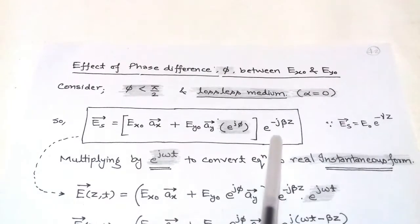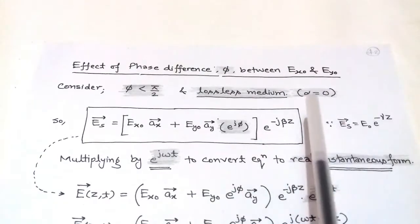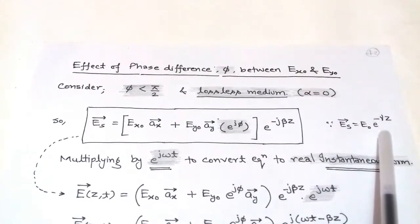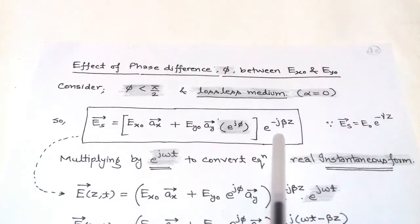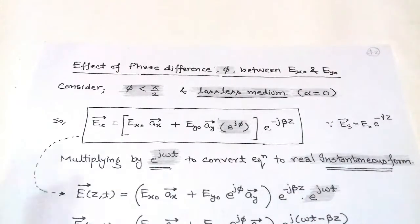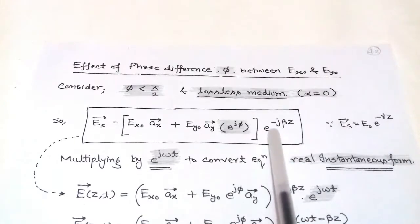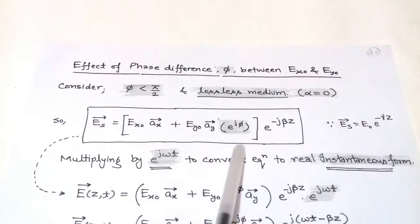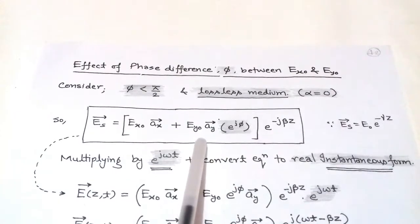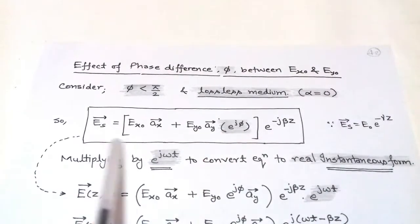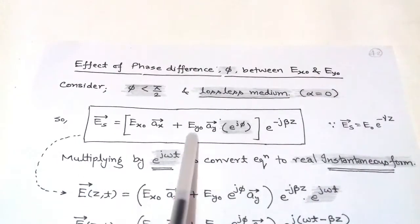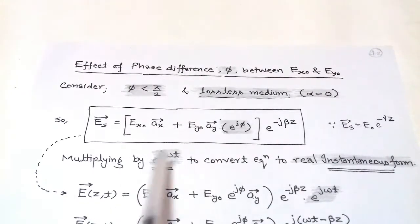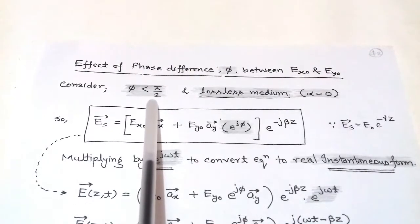Since the medium is lossless, α equals 0. When we write γ equals α + jβ, the exponent splits into e^(−αz) and e^(−jβz). By putting α = 0, the term e^(−αz) becomes 1. To introduce the phase difference φ, we multiply e^(jφ) with the Y component of E. This equation gives the effect of phase difference φ between Ex₀ and Ey₀.